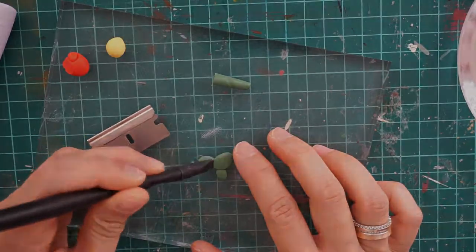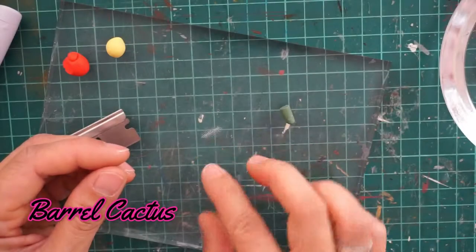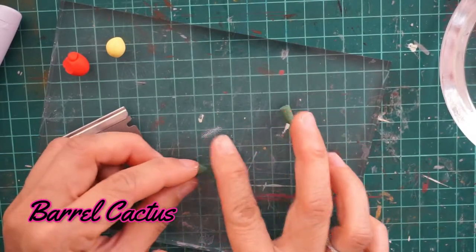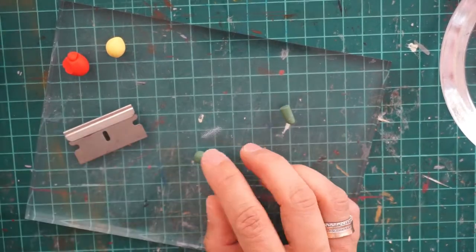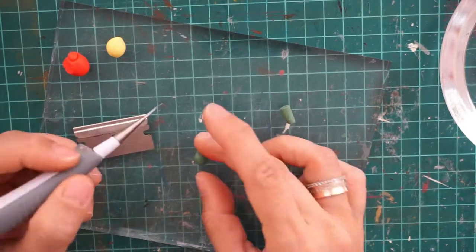Next type is the barrel cactus. For this you just need a small piece of polymer clay and shape it into a tear, and then sculpt lines around the cactus and set it aside.